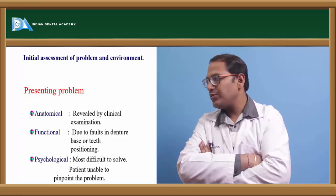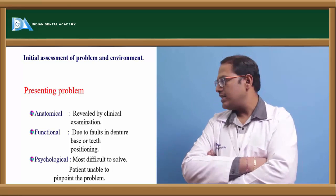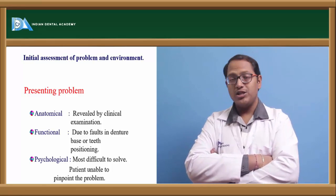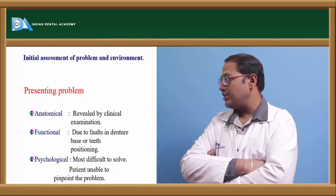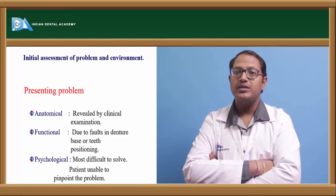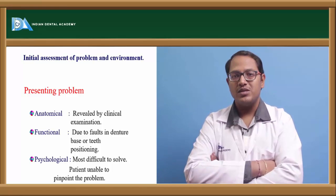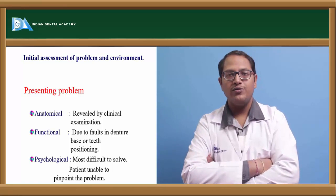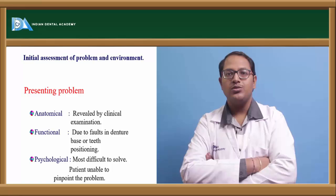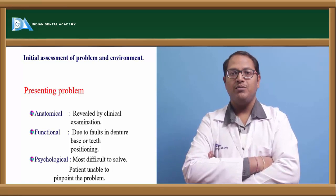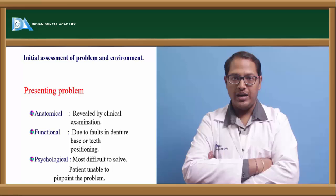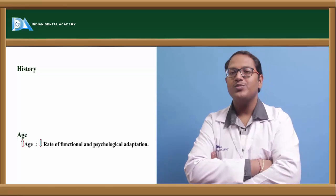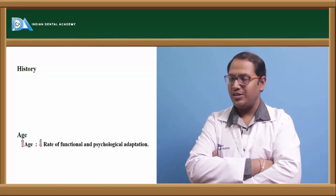Initially presenting problems: the patient can have anatomic problems revealed through clinical examination. There can also be functional problems due to a poor denture base affecting tissues. Physiologic and psychological problems are the most challenging — the patient may describe vague pain, making it very difficult for the dentist to locate exactly where the pain originates. This psychological issue is the most challenging for a dentist.